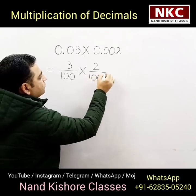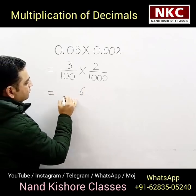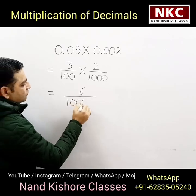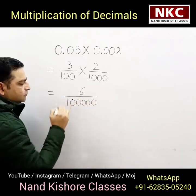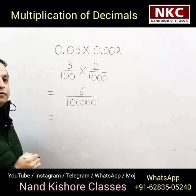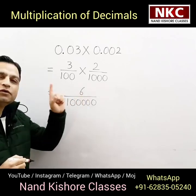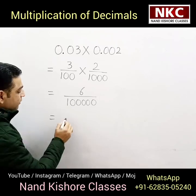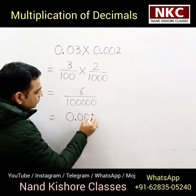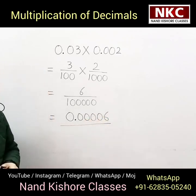Let's suppose the question is 0.03 times 0.002. This can be written as 3 over 100, and 0.002 can be written as 2 over 1000. Now, 3 multiplied by 2 is 6, and in the denominator you are having 5 zeros after multiplication — that is 6 upon 1 lakh. The final answer should contain, after the decimal, a total of 5 digits, but I am having only one digit: 6. The remaining 4 zeros need to be added, so the answer is 0.00006.